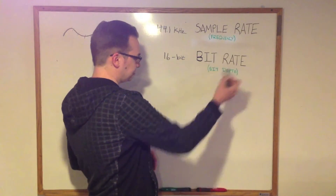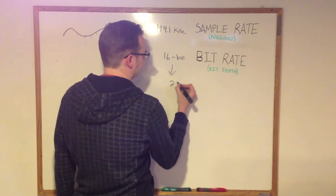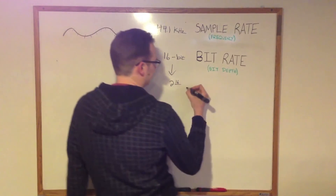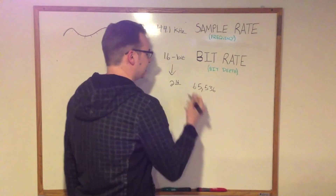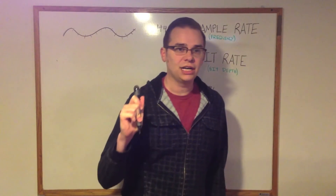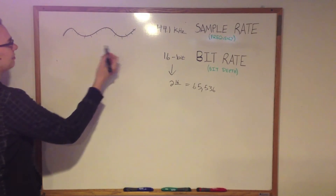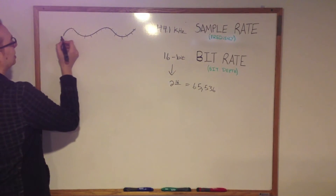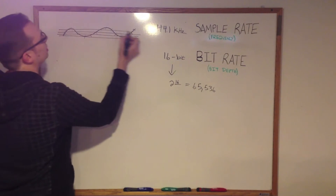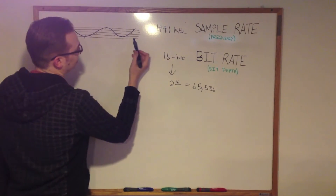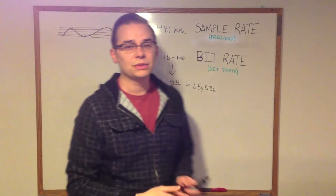The bit rate refers more to volume. The 16-bit number comes from 2 to the 16th power, which is 65,536. That's the number of different levels of volume that can be represented. So if we look at our sound file with all these little samples, the number of volumes that can be represented is your bit rate or bit depth. There are 65,000 of those volume levels when we're dealing with CD audio.